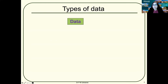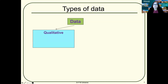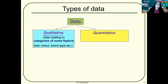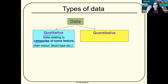So what are the different types of data? We have two types: qualitative and quantitative. As the term indicates, qualitative data is based on quality. It is data relating to categories of some feature — data that cannot be measured easily but can be observed subjectively based on opinion, feelings, texture, smell, or taste.